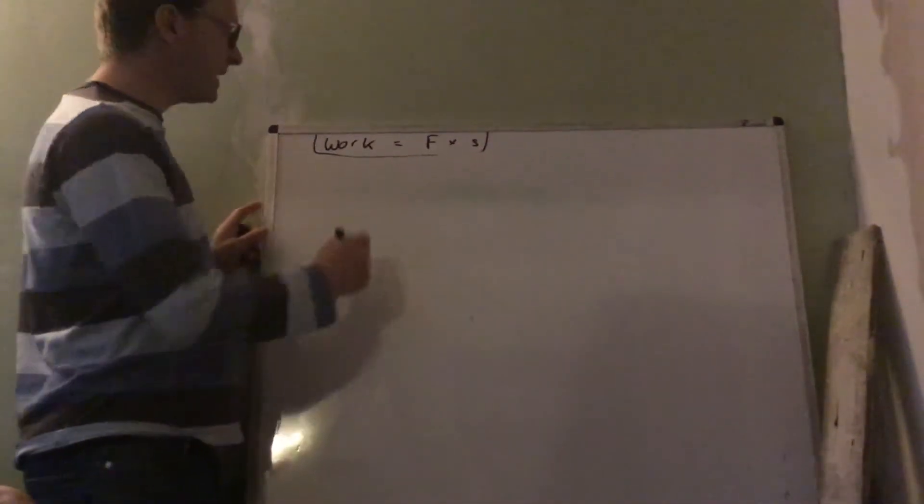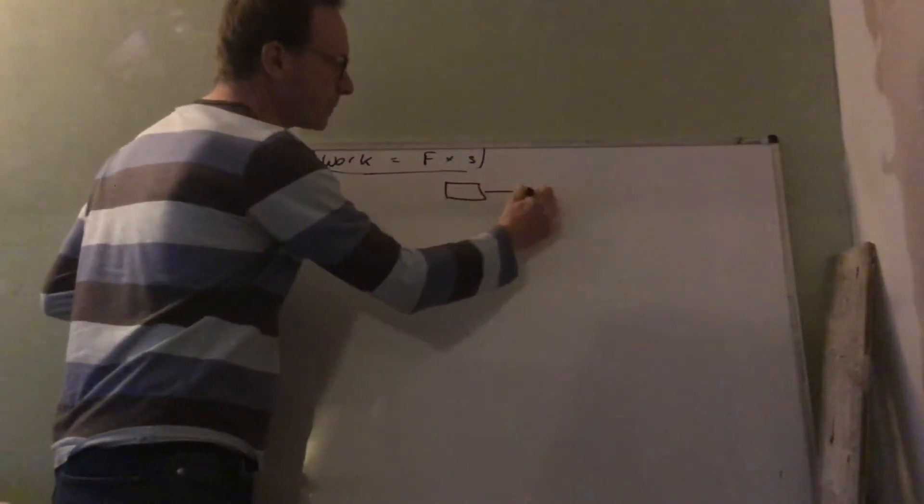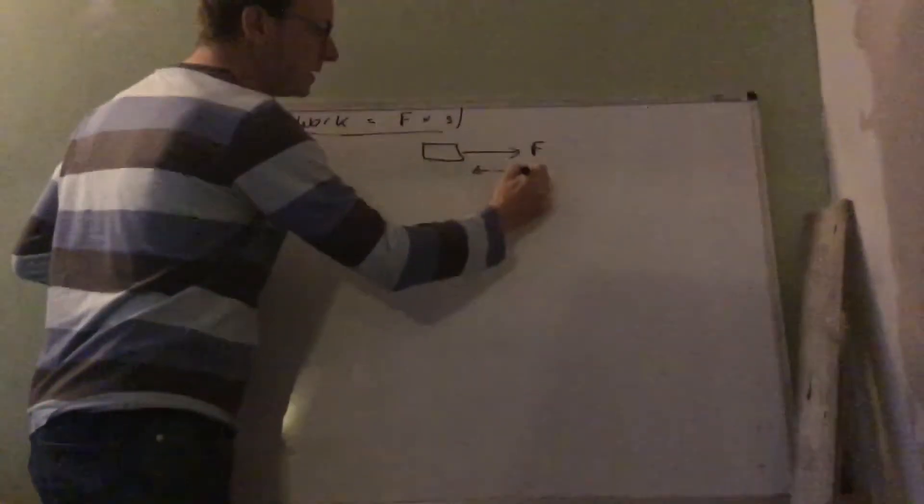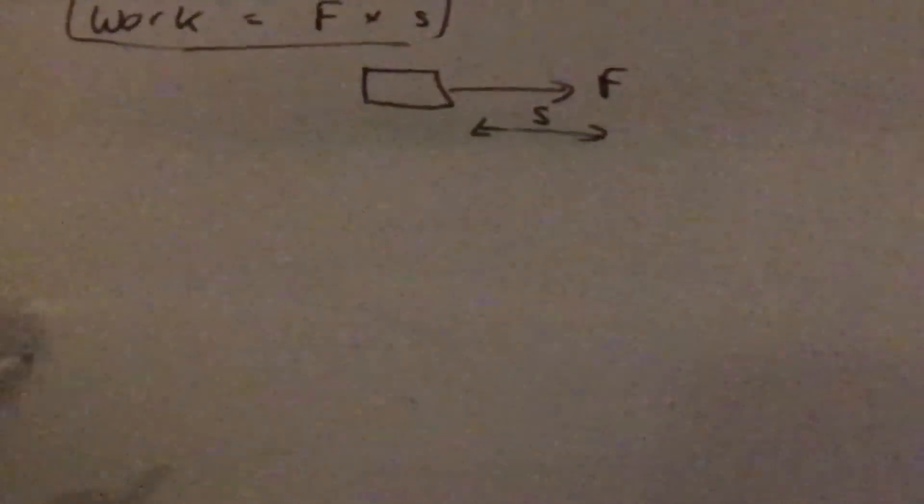Quick reminder from Year 11: work is force times distance. So if you push an object with a force F through the displacement S, work equals F times S. However, A-level is a little bit harder now, because if we push an object parallel to the direction of motion, that's okay, but if we...